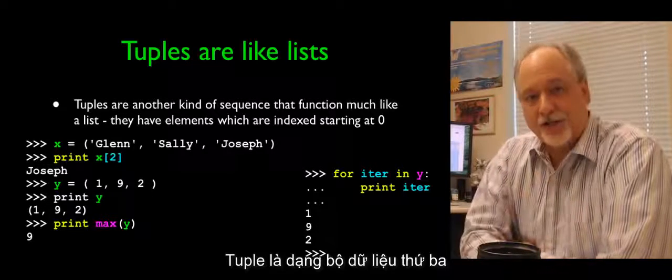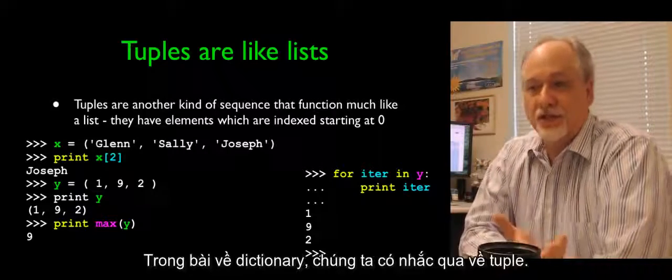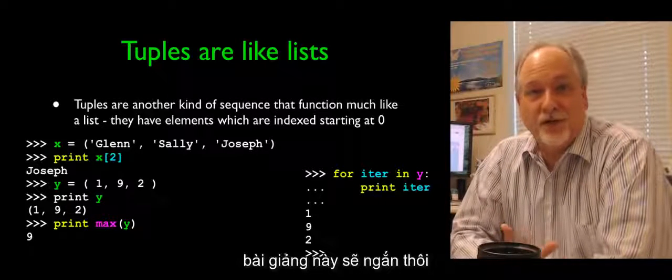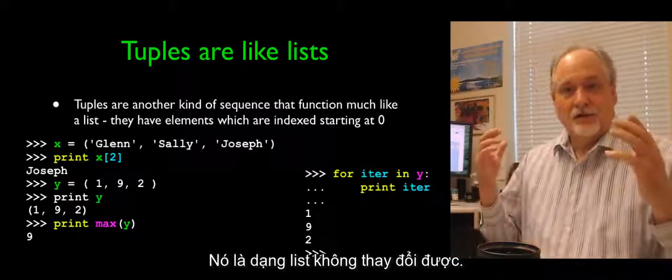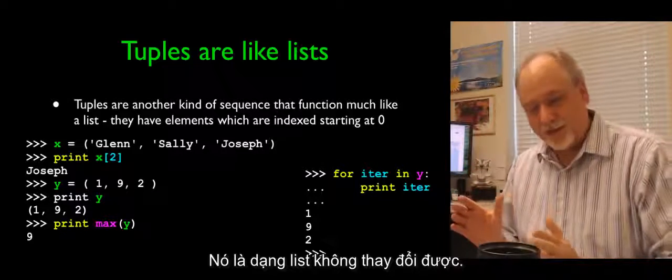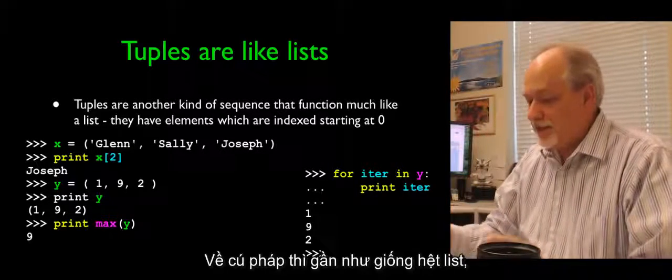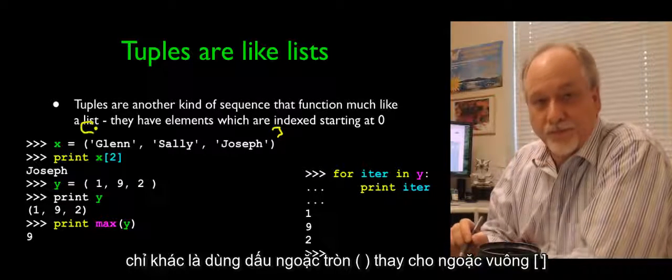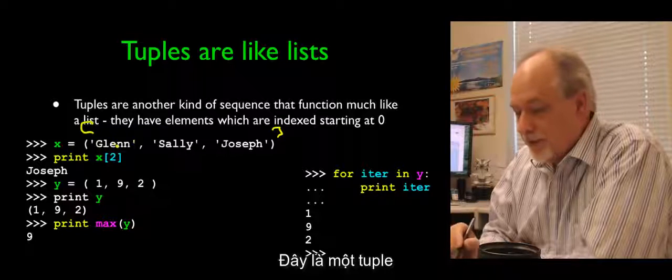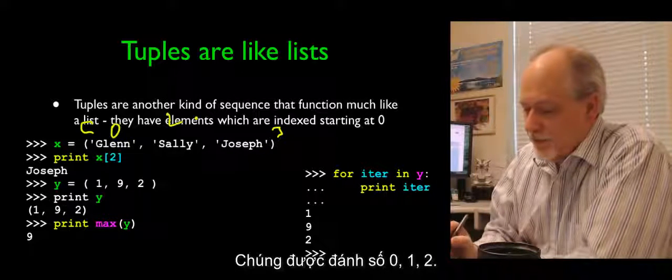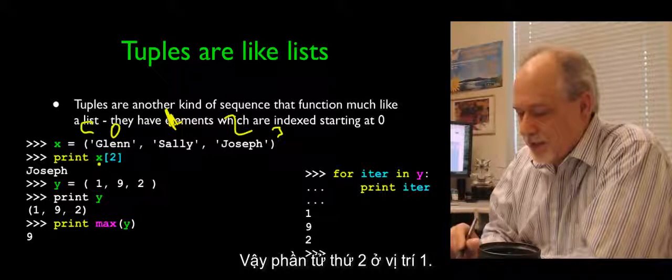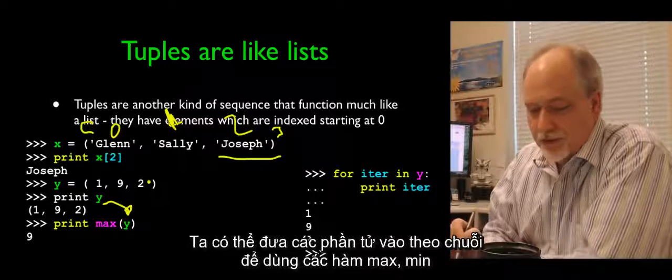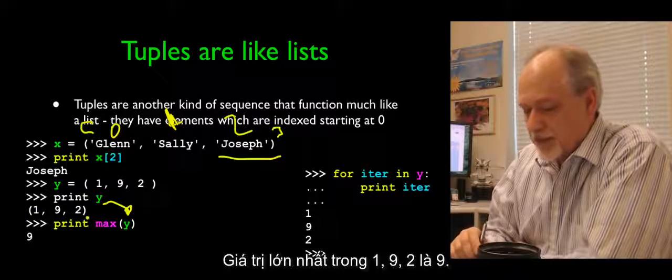So tuples are the third kind of collection that we've talked about. We've talked about lists, we've talked about dictionaries, and in the dictionary lecture we kind of alluded to tuples. We don't have to talk too much about tuples. We're really shortening the lecture by telling you that they're a lot like lists. They're a non-changeable list. And the syntax of them is pretty much the same as a list, except that we use parentheses instead of square brackets. And so here is a three-tuple, a tuple with three items in it: Glenn, Sally, and Joseph. They are numbered 0, 1, and 2, so the second thing is 1. So x sub 2 is indeed Joseph. We can pass them in as sequences to things like max or min or sum. And so the maximum of 1, 9, 2 is 9.